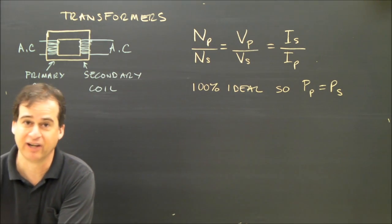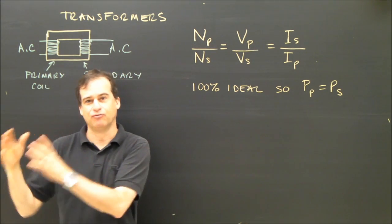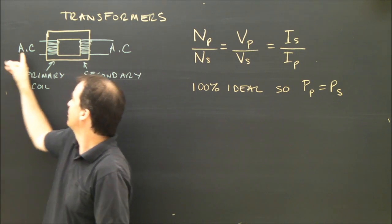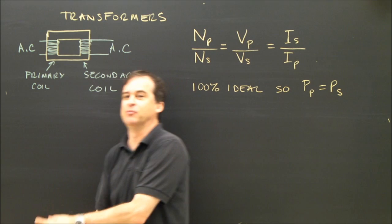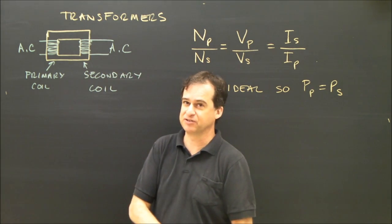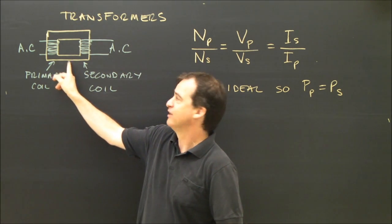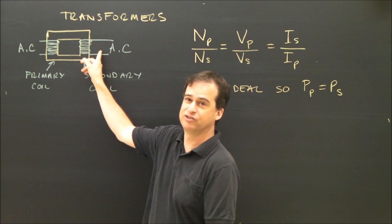What a transformer does is it takes voltage from this side and changes it to a different voltage. So if I want the voltage to go from 100 to 200 volts in my circuit, I need a transformer. It'll take the voltage from 100 volts to 200 volts.